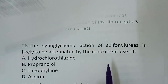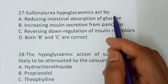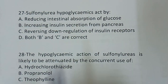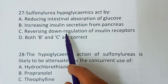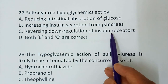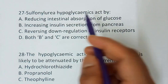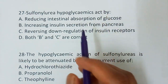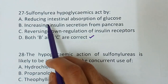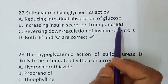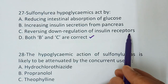Question number 27 — sulfonylurea hypoglycemics act by: option A, reducing intestinal absorption of glucose; option B, increasing insulin secretion from the pancreas; option C, reversing down-regulation of insulin receptors; option D, both B and C are correct. The correct answer is option D — both B and C. Sulfonylureas act by increasing insulin secretion from the pancreas and also by reversing down-regulation of insulin receptors.